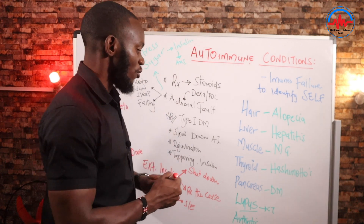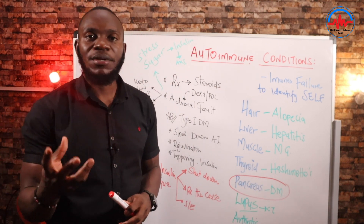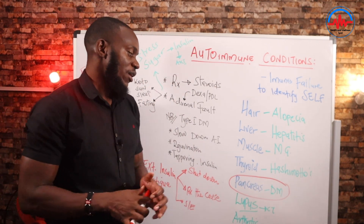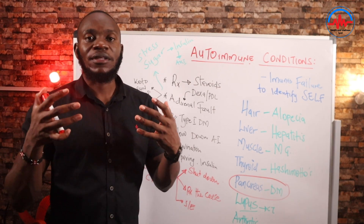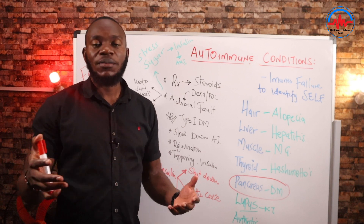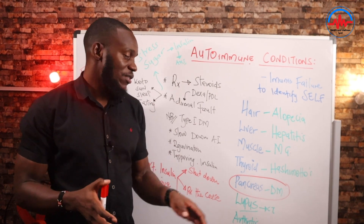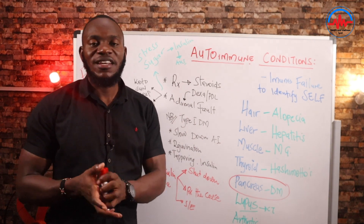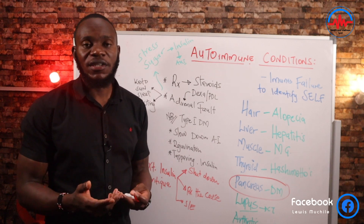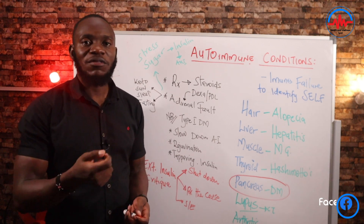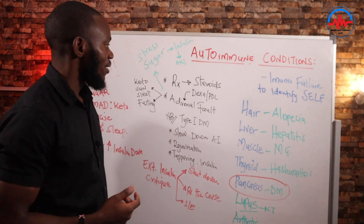Of importance here is in the pancreas, where we get diabetes — specifically type 1. In type 1 diabetes, the pancreatic immune cells start to target the beta cells that produce insulin. Once it kills those beta cells, you cannot produce enough insulin and you start having a default in insulin production. That means your blood sugar levels will be unregulated.